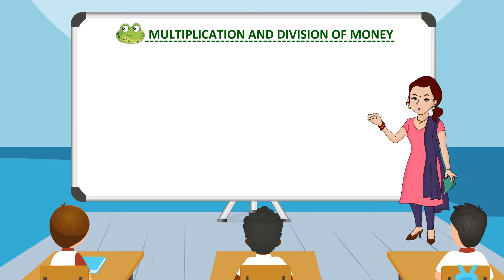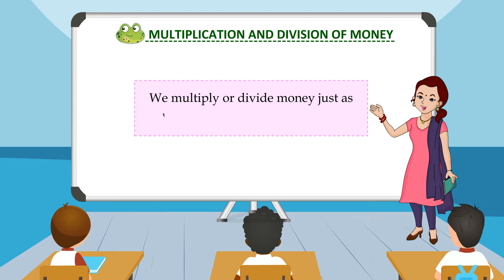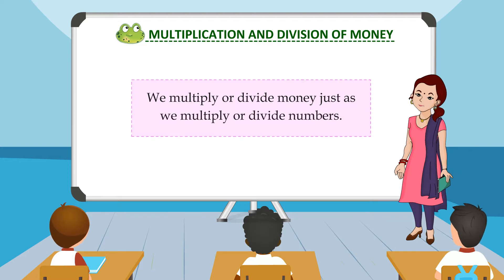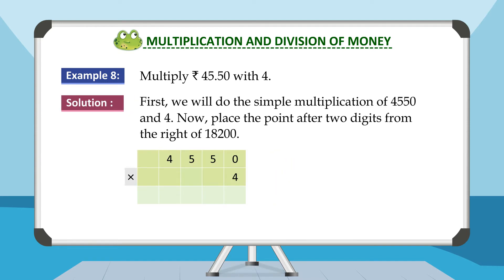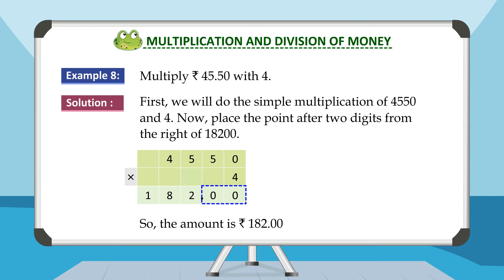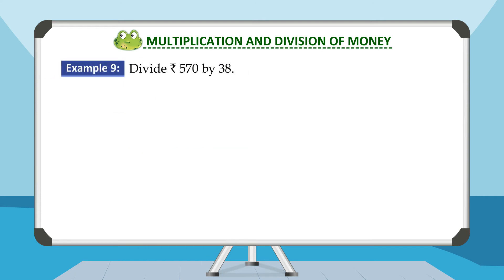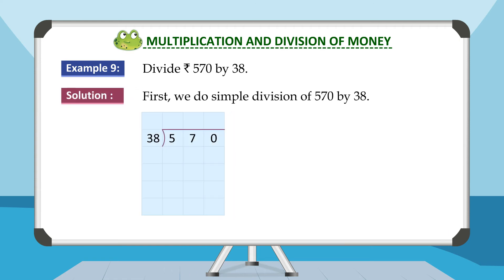Multiplication and Division of Money. We multiply or divide money just as we multiply or divide numbers. Example 8: Multiply rupees 45 and 50 paise with 4. Solution: First, we do the simple multiplication of 4550 and 4. Then place the decimal point after two digits from the right of 18200. So the amount is rupees 182 and 0 paise. Example 9: Divide rupees 570 by 38. Solution: We do the simple division of 570 by 38, giving the amount of rupees 15.